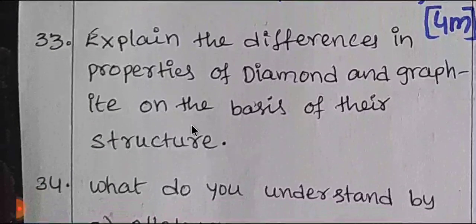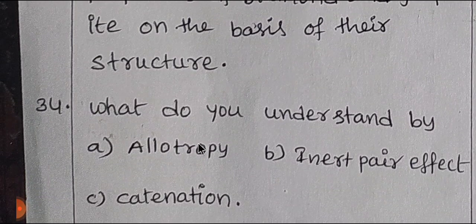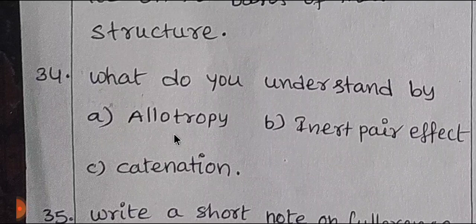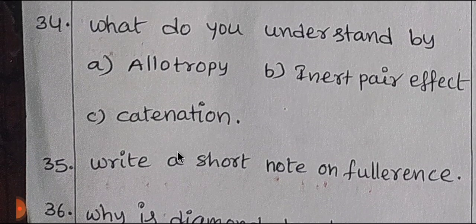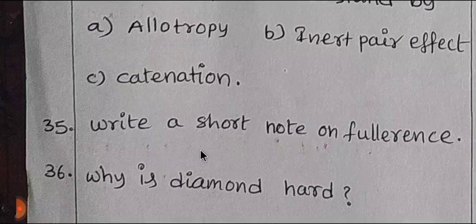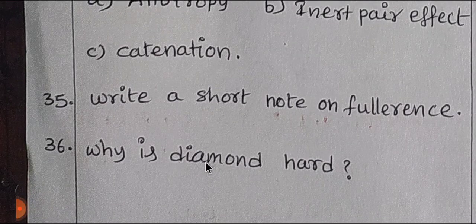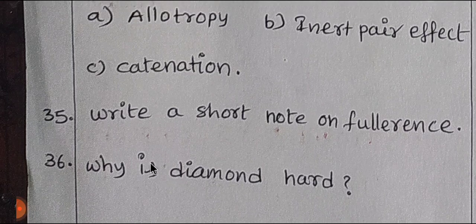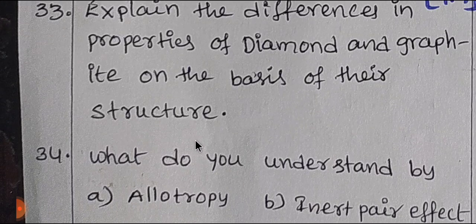Topics in 14th group elements: the difference between graphite and diamond; understanding allotropy, inert pair effect, and catenation — define these three with examples; write a short note on fullerenes; explain why diamond is hard. You have 36 questions up to this point, so proceed to the next lesson.